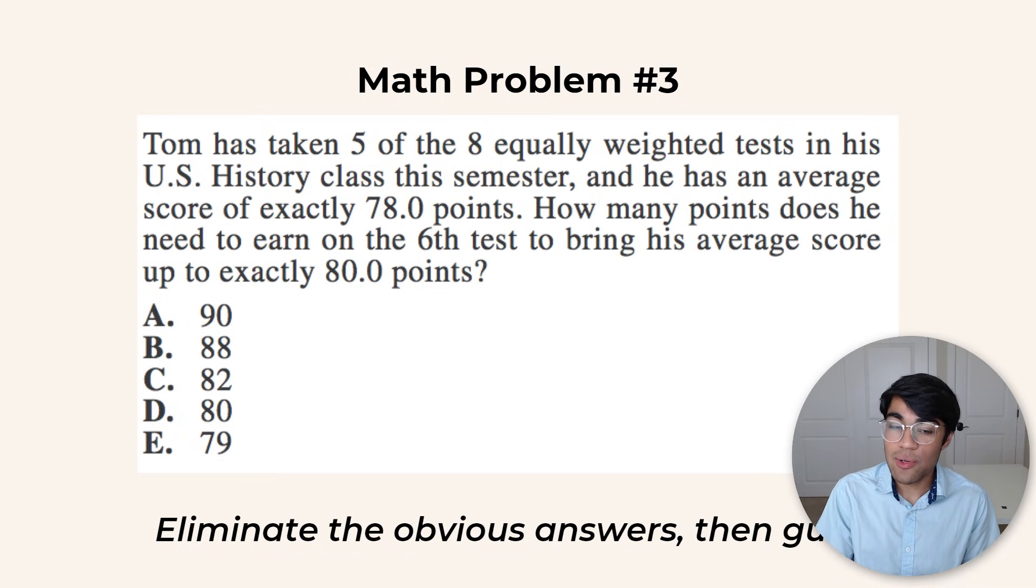You get rid of 82, and using your process of elimination by knowing that he needs to score a pretty high amount to raise that average if he's already taken 5 of them, you can eliminate C, D, and E and get into a 50-50 situation which sets you up for a lot more success.